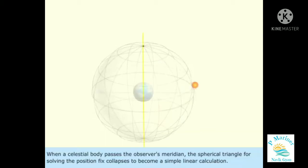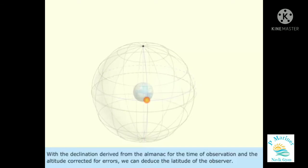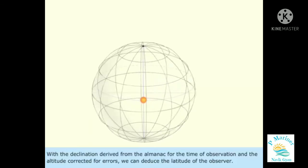Meridian Passage. When a celestial body passes the observer's meridian, the spherical triangle for solving the position fix collapses to become a simple linear calculation. With the declination derived from the almanac for the time of observation and the altitude corrected for errors, we can deduce the latitude of the observer.